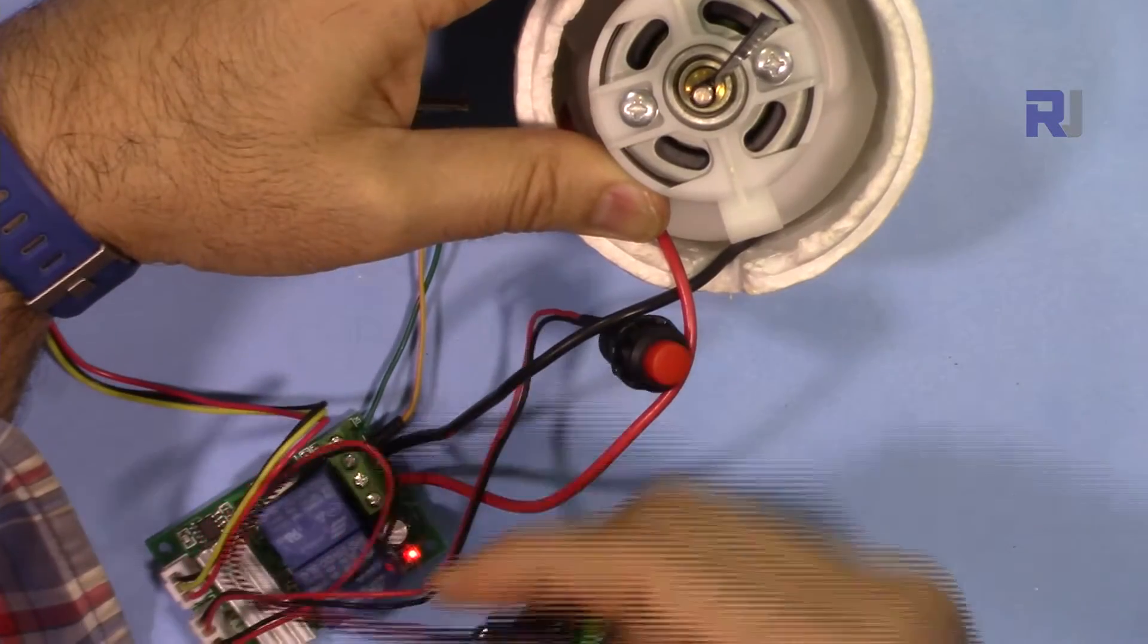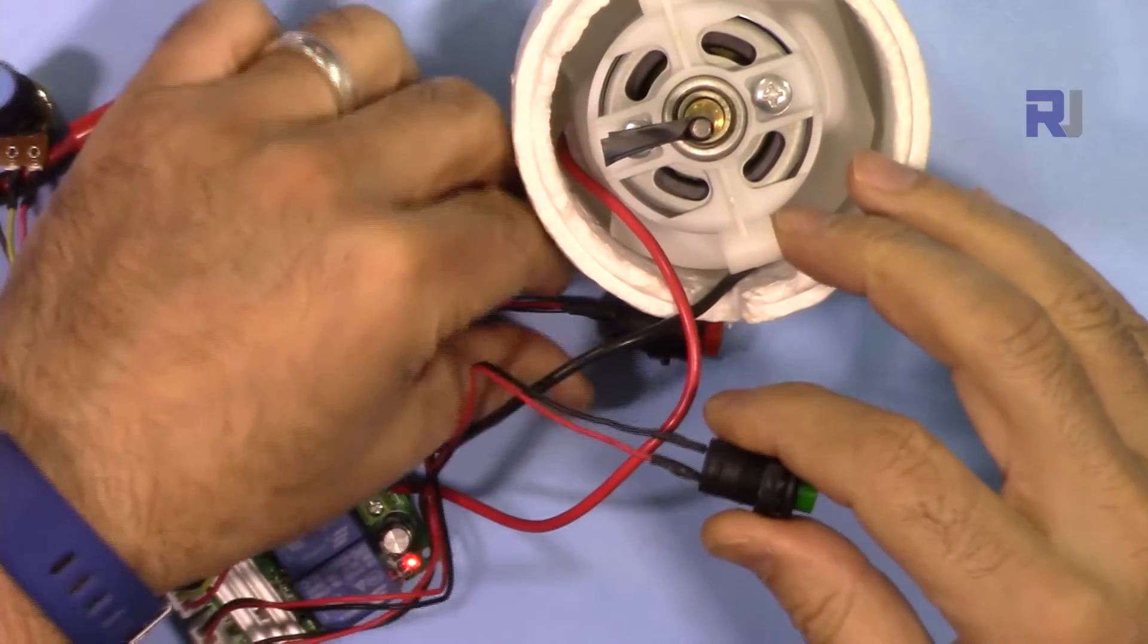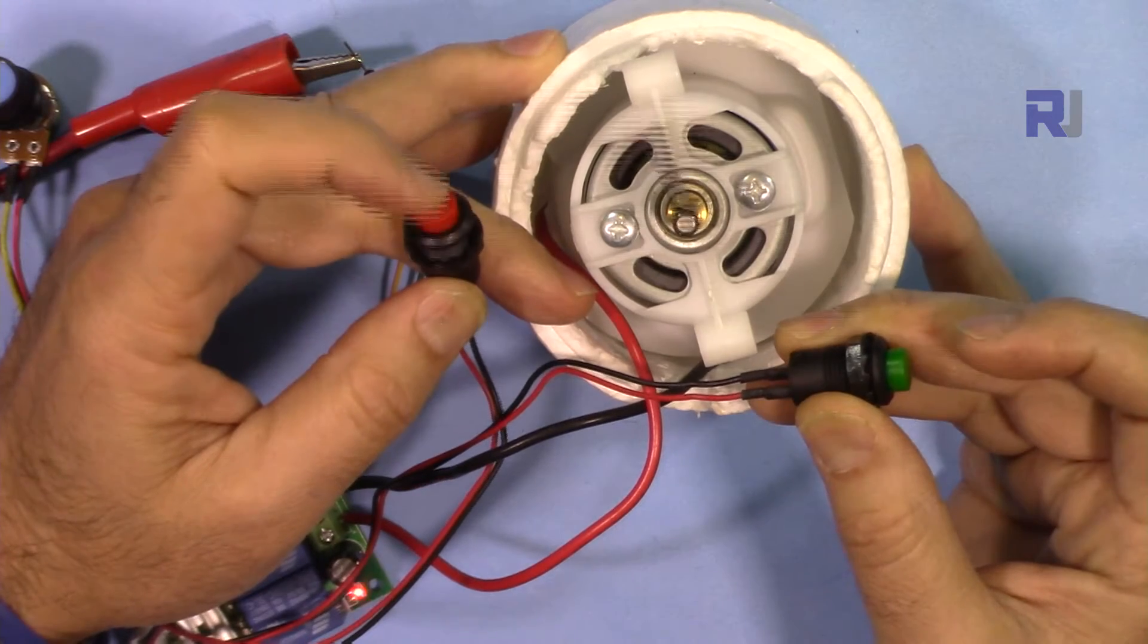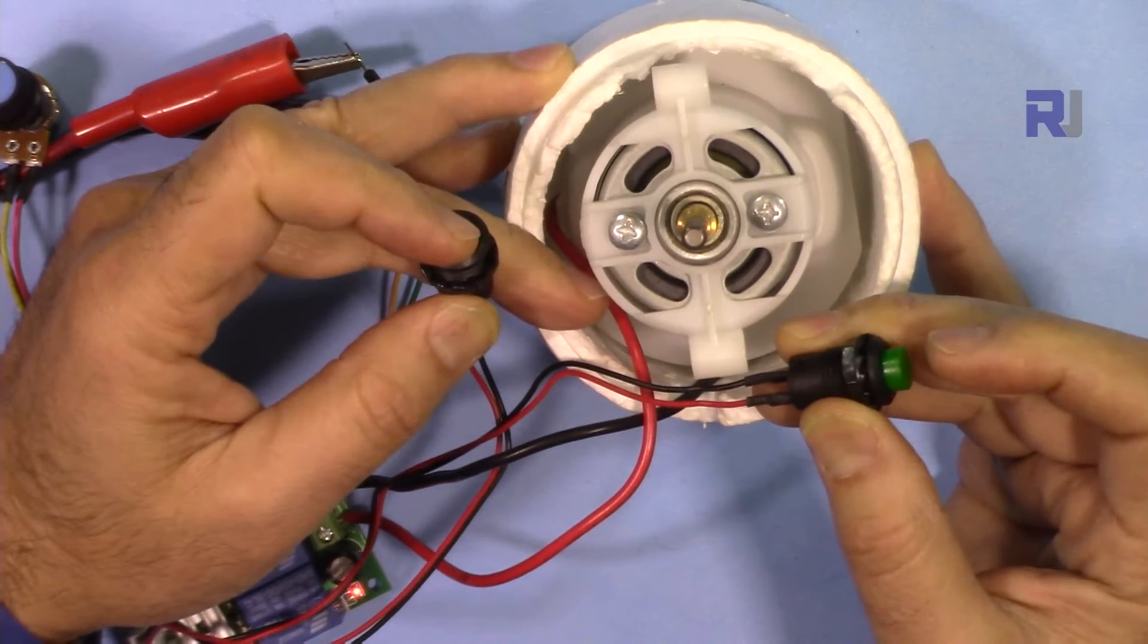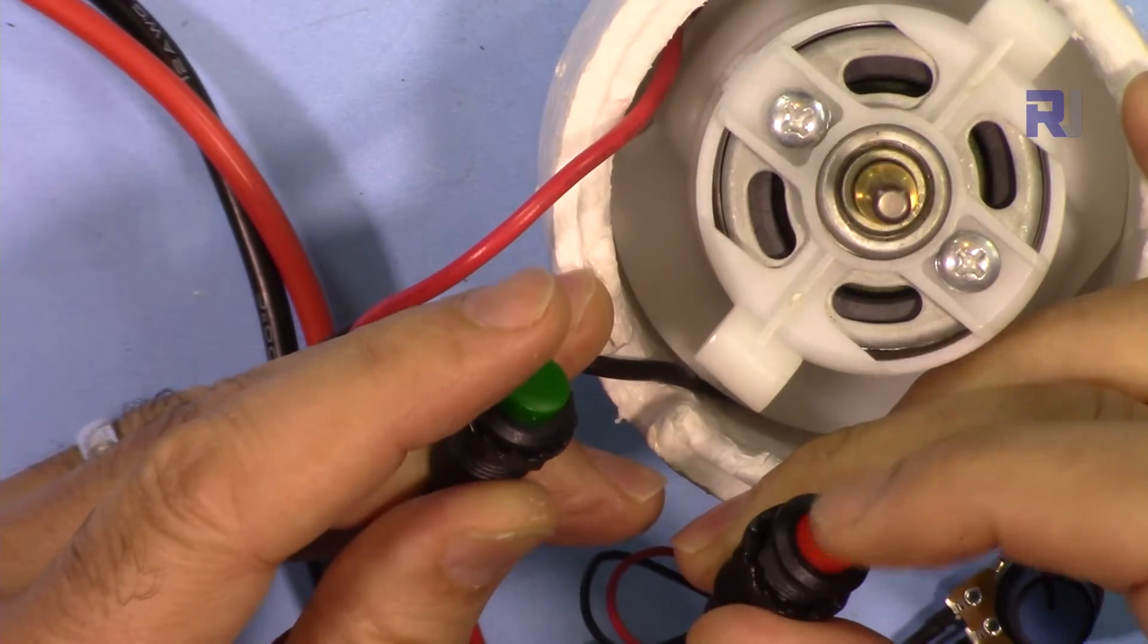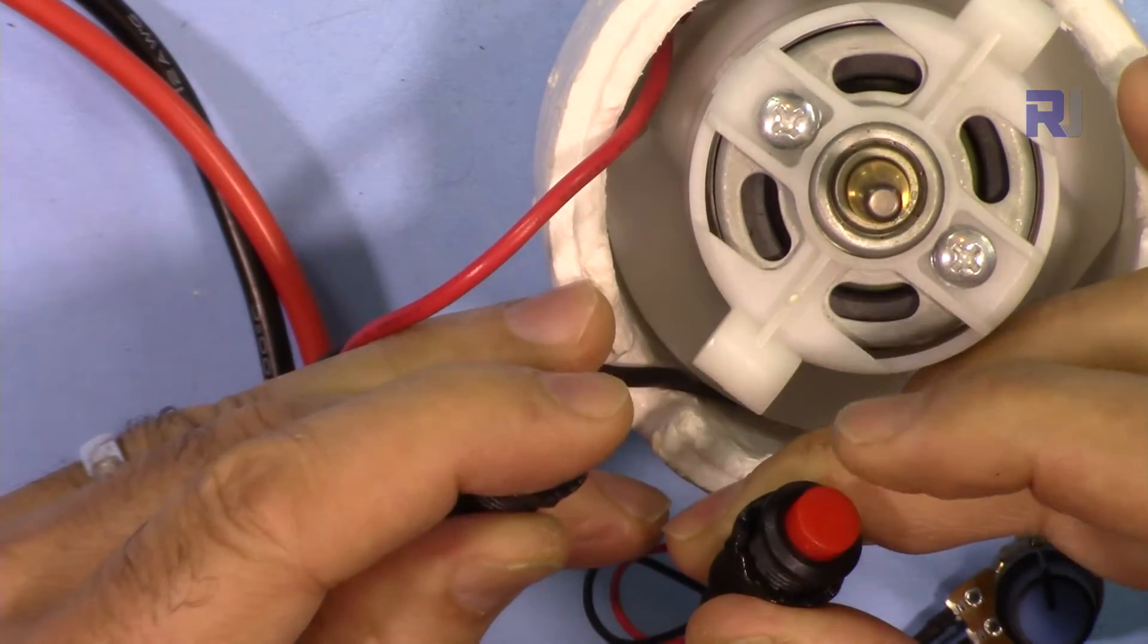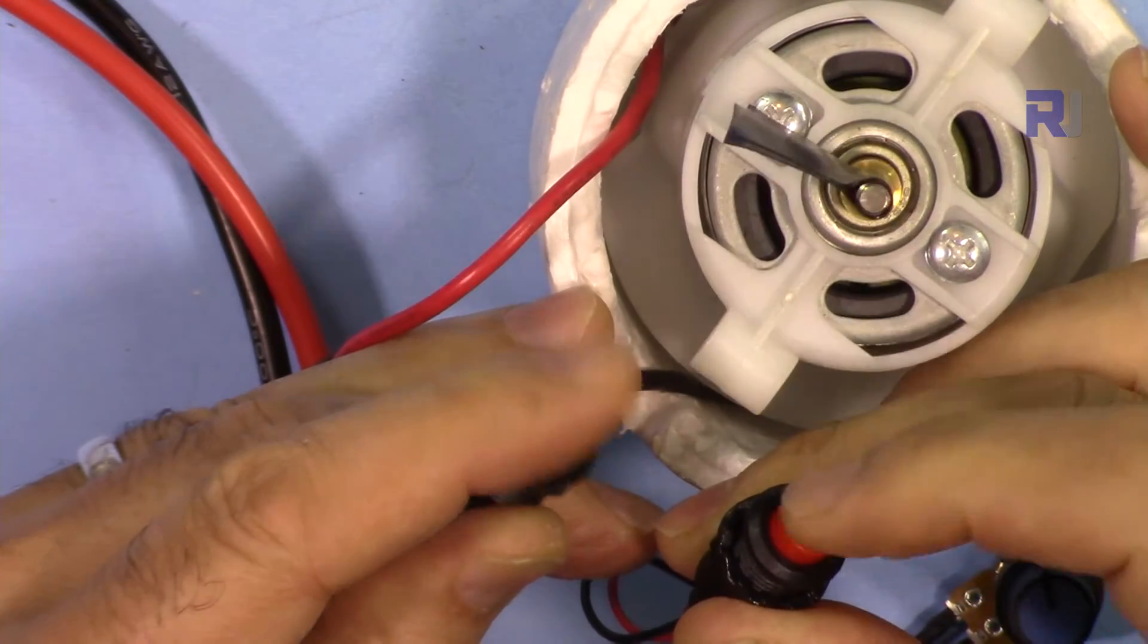So now let's do the counterclockwise. I'll hold it and then let's try both. Clockwise, counterclockwise. But if I press both nothing will happen because it will be disconnected. That's very safe. If both relays turned on, the power will be disconnected.